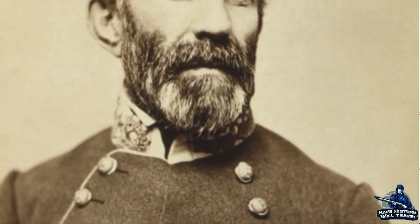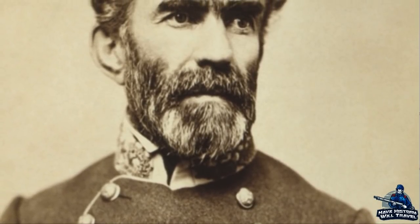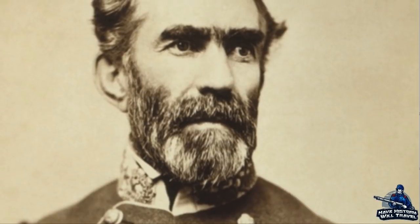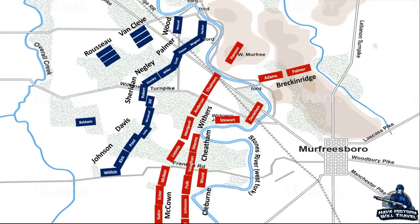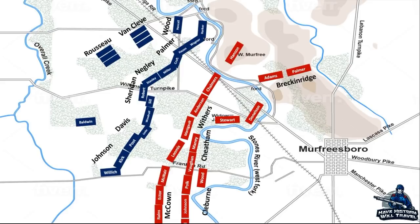The Army of Tennessee was firmly dug in, and all Bragg had to do was wait for an attack and crush it in similar fashion to the way Robert E. Lee had done at Fredericksburg. However, Bragg went on the offensive. He shifted Hardee's corps west to extend the Confederate line, planned on attacking the vulnerable Union right flank, push into the Union army's rear, and cut it off from Nashville. Conversely, Rosecrans was making plans to attack the next morning as well — just like Bragg, he was going to use the troops on his left to fracture the Confederate right and cut the Army of Tennessee off from Murfreesboro.